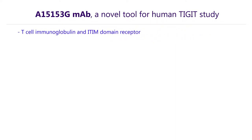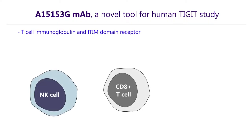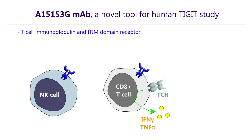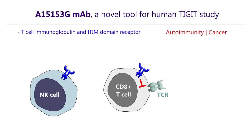TIGIT can be found on T-cells and NK-cells. In mice, it's been shown that TIGIT is a checkpoint molecule which can shut down immune responses. It's a potential therapeutic target in autoimmunity and cancer. However, human TIGIT studies have been harder to establish since reagents have been limited.